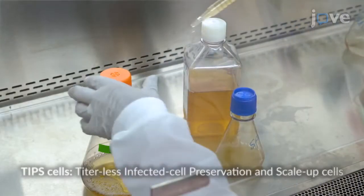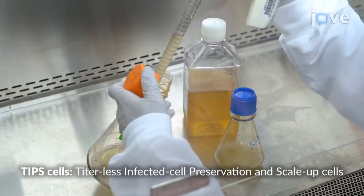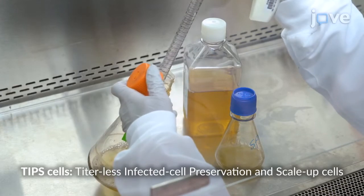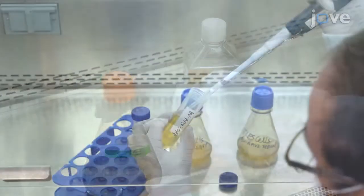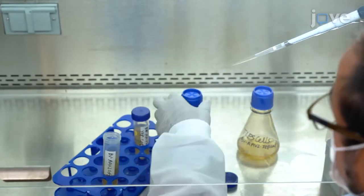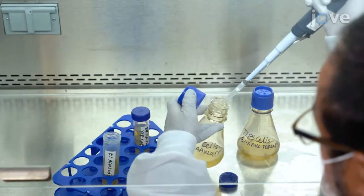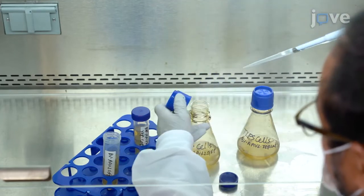Propagate the cells in a one liter flask containing 200 milliliters of medium to obtain enough cells for AAV production. Add 50 milliliters of SF9 cells at 2 times 10 to the sixth power cells per milliliter in two flasks.